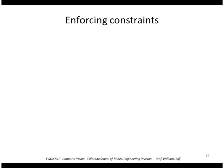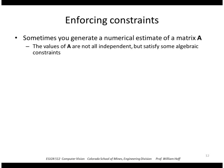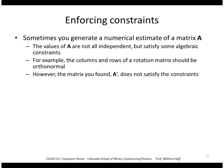Alright, the other thing we're going to see SVD being used for is to enforce constraints. So sometimes you generate a numerical estimate of a matrix A. But the values of A are not all independent, but should satisfy some algebraic constraints. For example, the columns and rows of a rotation matrix should be orthonormal. However, the matrix that you found, A prime, does not necessarily satisfy those constraints. So that could be a problem. You want a matrix that is a valid rotation matrix.